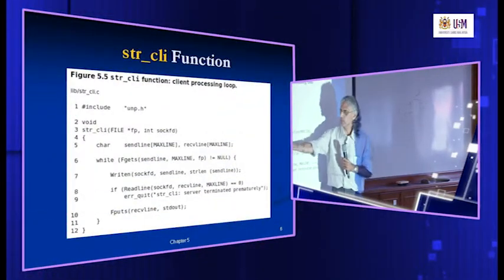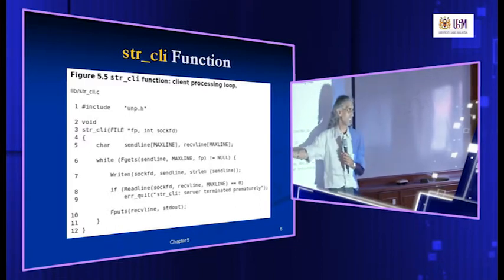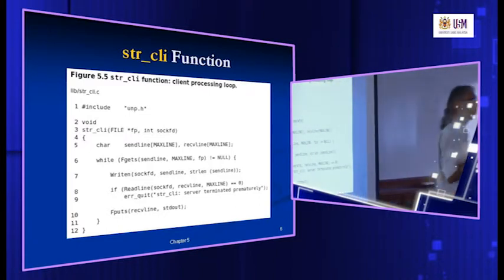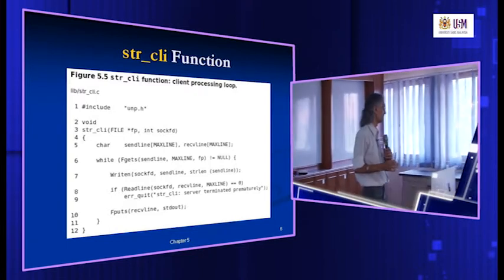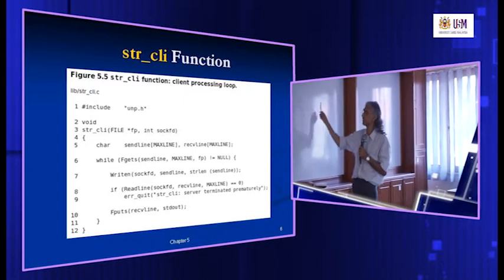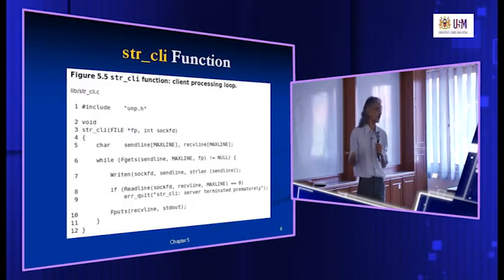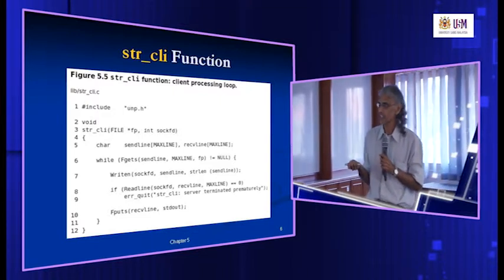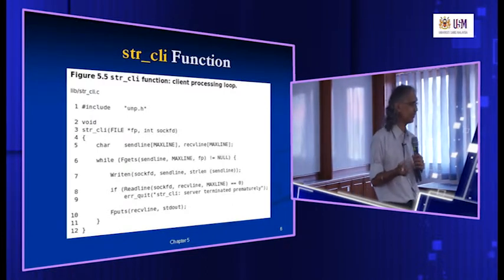If you look back at the code, the client is waiting to get a line from the user using fgets — it is waiting here for the user to key in something. fgets is a function to read input from the terminal or keyboard, nothing to do with the socket. If the server has died, the only way the server can inform the client is by the socket. But the client is stuck waiting at fgets for user input, not checking the socket. That is the main reason the client does not know.